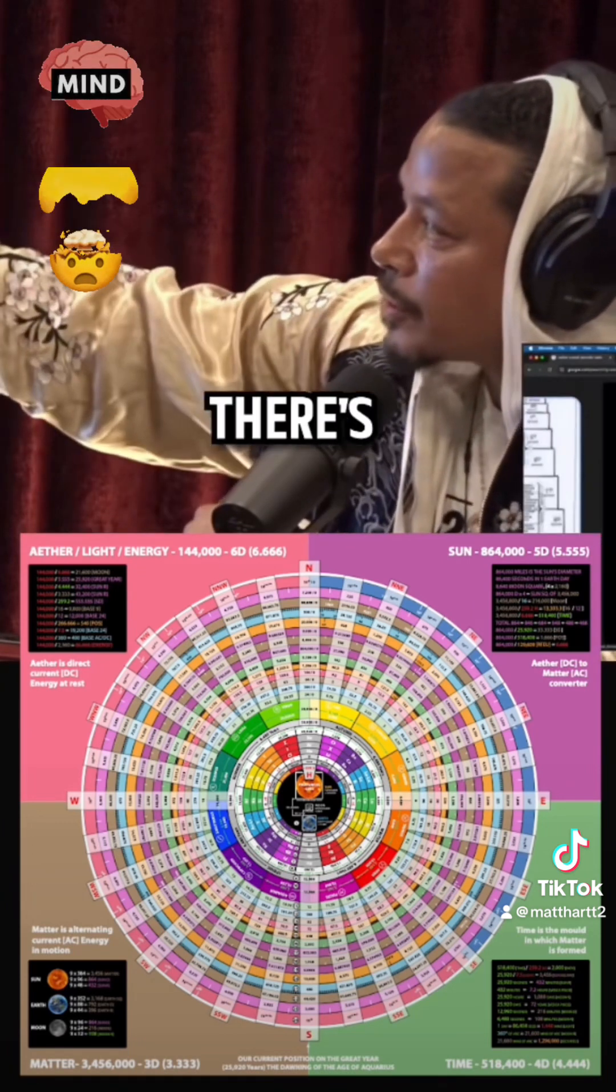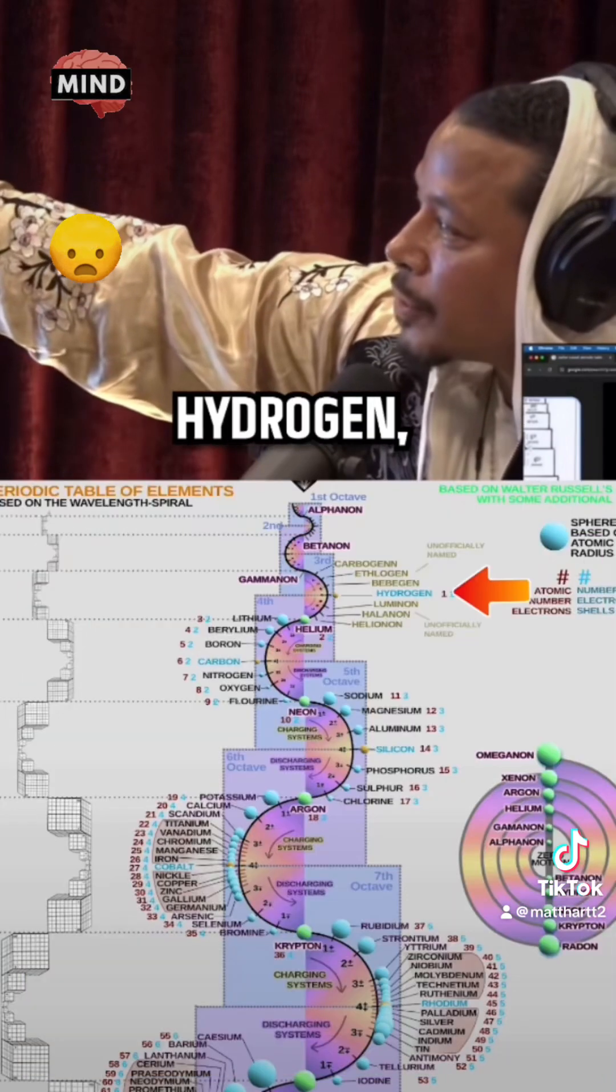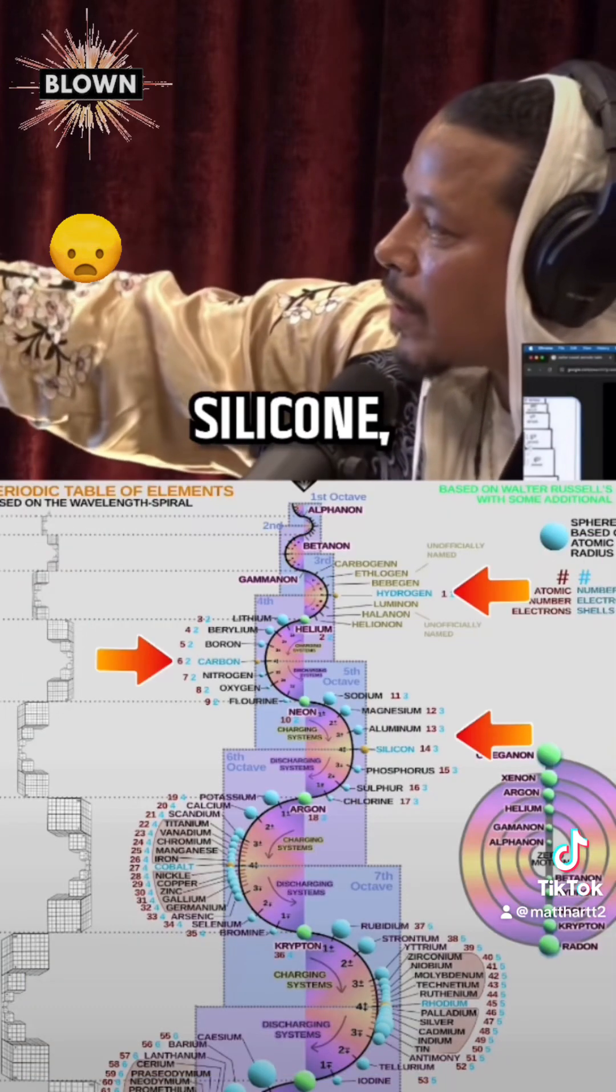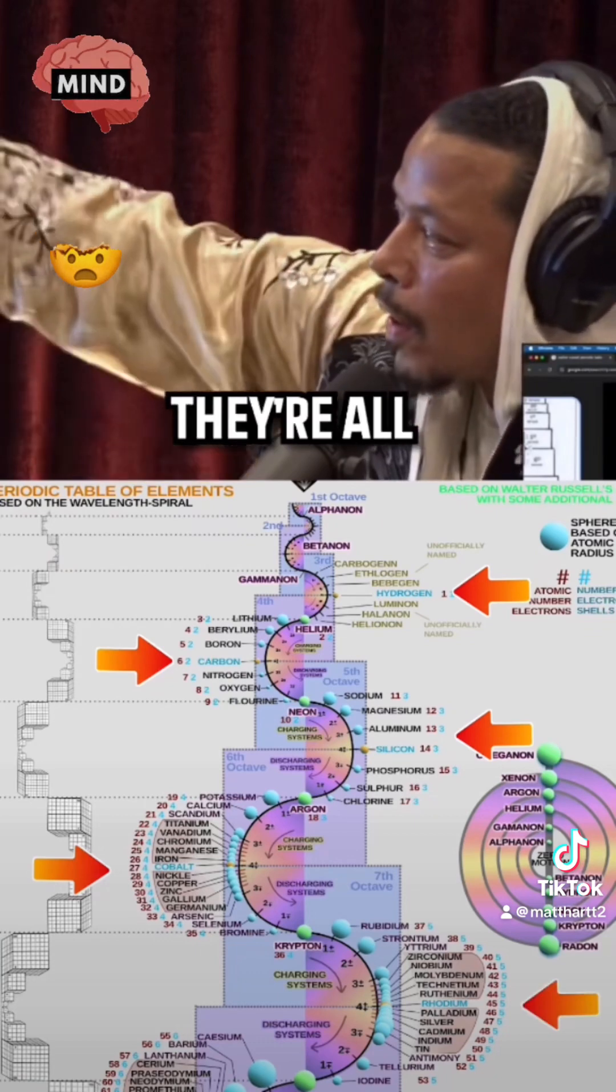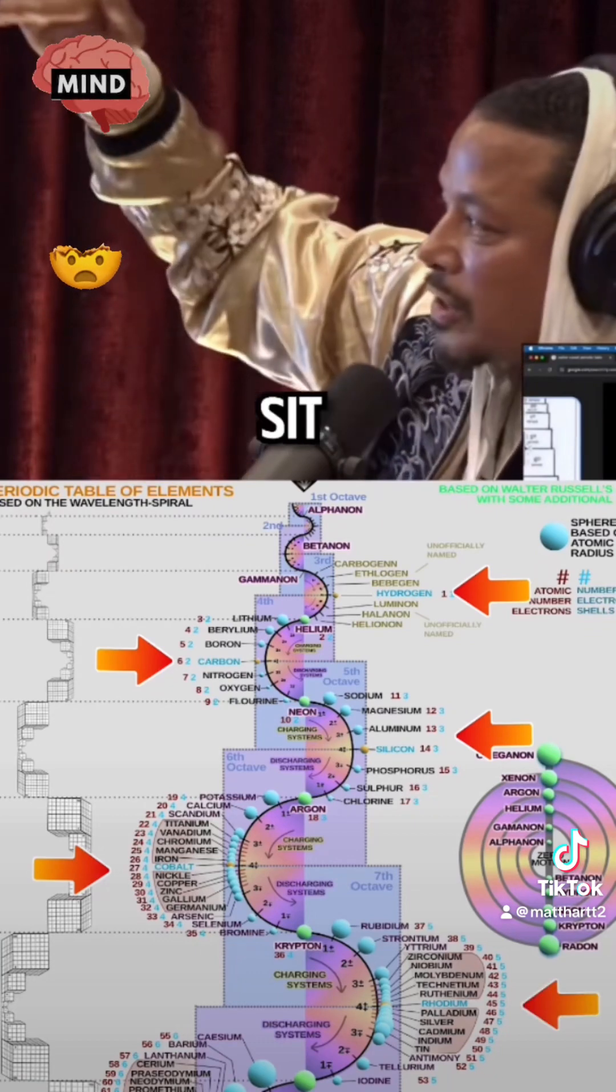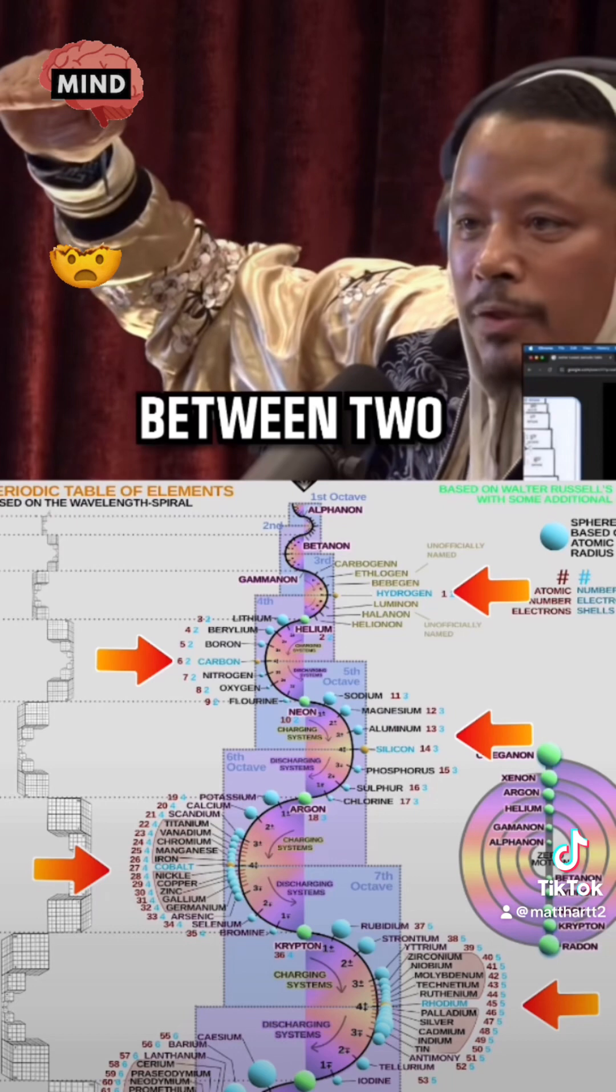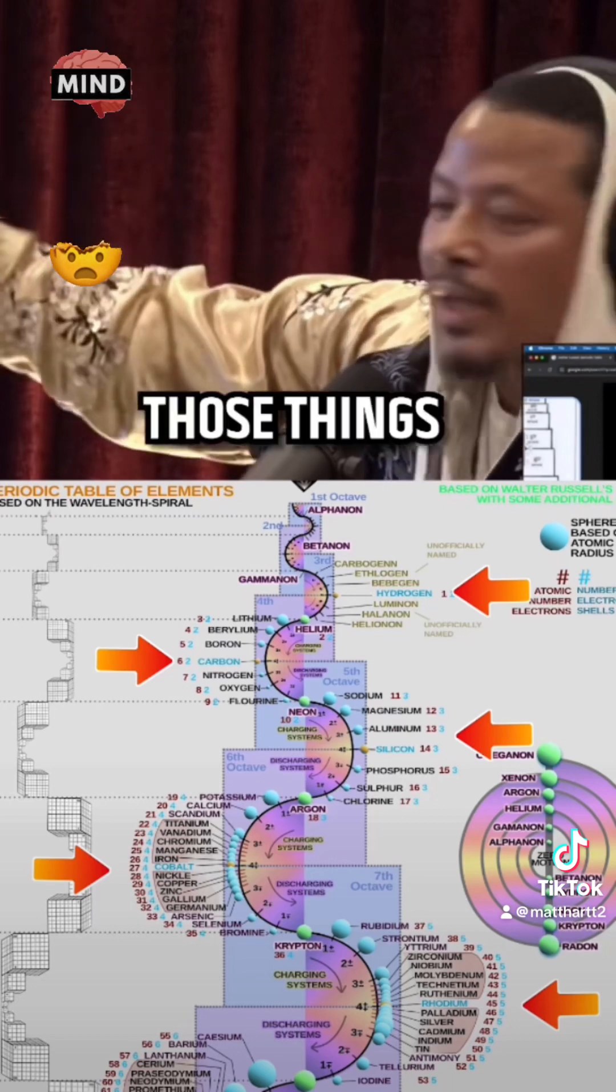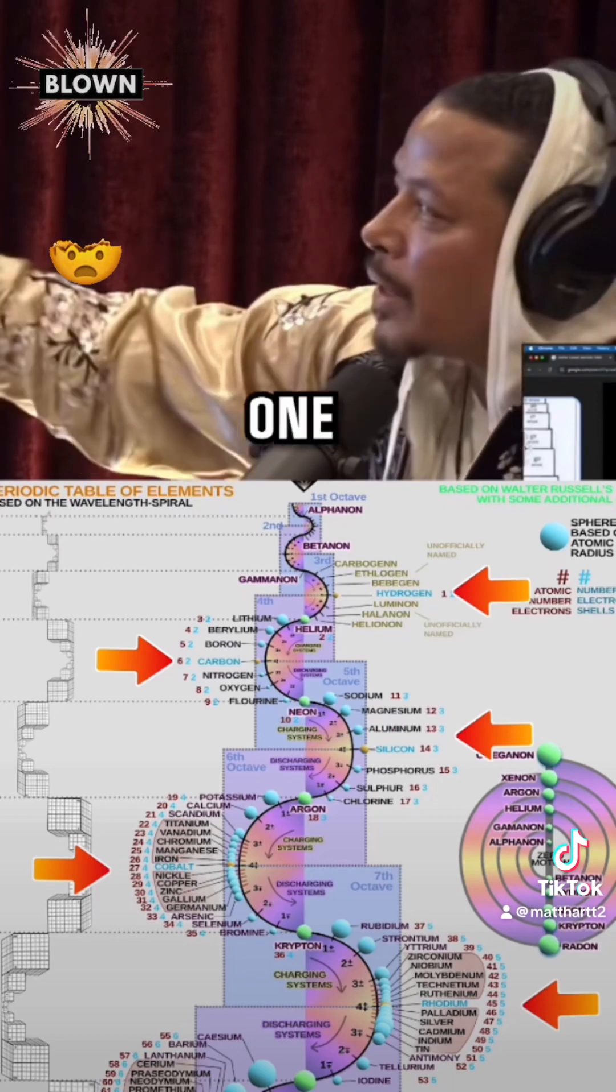You'll see there's a relationship between hydrogen, carbon, silicon, cobalt, rhodium. They're all bonded. They all sit as the middle point between two noble gases. So those things don't really exist. It's only one substance.